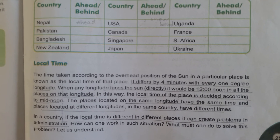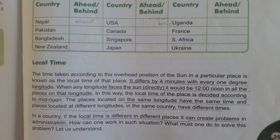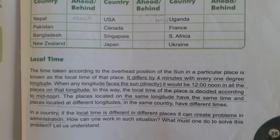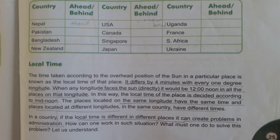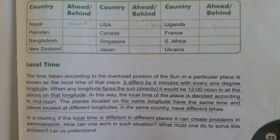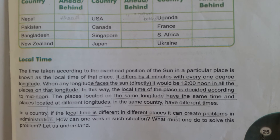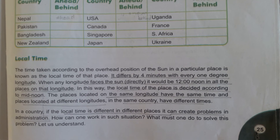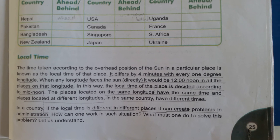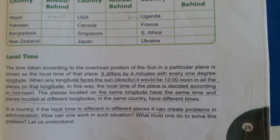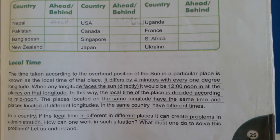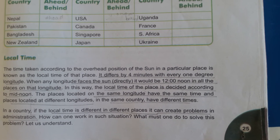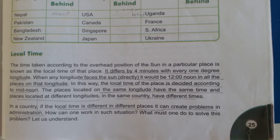Now we will see about local time. The time is usually taken according to the overhead position of the sun in a particular place — that is the local time of that place. It differs by four minutes for every one degree of longitude. Places on the same longitude will have the same time.